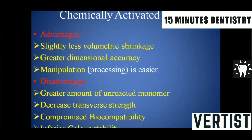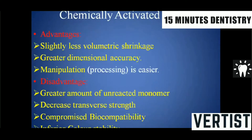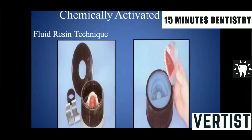The advantages of chemically activated resin include slightly less volumetric shrinkage, greater dimensional accuracy, and easier deflasking compared to heat-cured resin. However, it contains a greater amount of unreacted monomer, which leads to decreased transverse strength, reduced biocompatibility — making it unsuitable for direct intraoral use — and inferior color stability, as oxidation of the residual monomer occurs in the oral cavity.